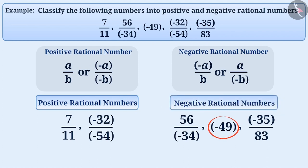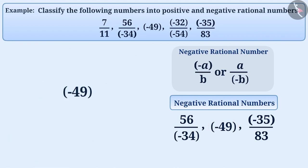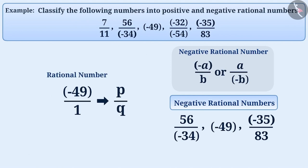Here, we have also considered minus 49 as a negative rational number. Can you tell me why minus 49 is a negative rational number? Since minus 49 can be written as minus 49 by 1, this number can be represented in the form of p by q, which shows that it is also a rational number. Since, of its numerator and denominator, only the numerator is a negative integer, this number is a negative rational number.